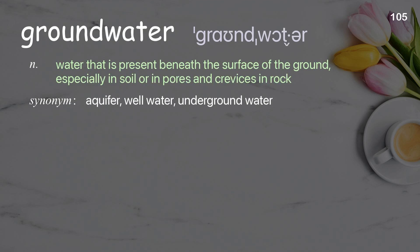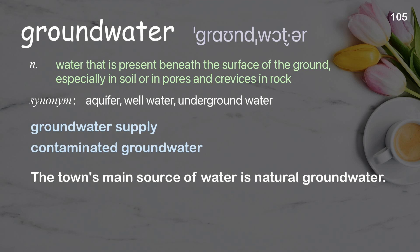Groundwater: water that is present beneath the surface of the ground, especially in soil or in pores and crevices in rock. Examples: groundwater supply, contaminated groundwater. The town's main source of water is natural groundwater.